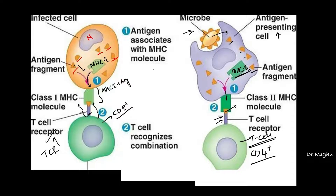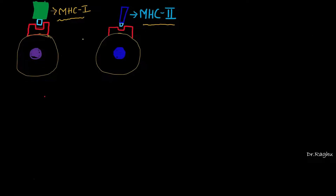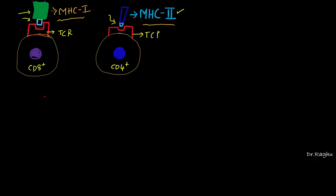To summarize the two steps so far: antigen processing and presentation, and antigen recognition. MHC1 along with the antigen is presented to the CD8-plus T-lymphocyte, which identifies it via the T-cell receptor. Similarly, MHC2 along with the antigen is presented to the CD4-plus T-lymphocyte, which also identifies it using the T-cell receptor.